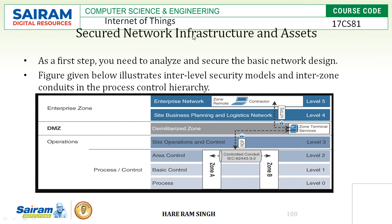As a first step for Secure Network Infrastructure, you need to analyze and secure the basic network design. The figure below illustrates inter-level security models and inter-zone conduits in the process controlled hierarchy. It shows how we can provide security to the environment or platform at each hierarchy level.